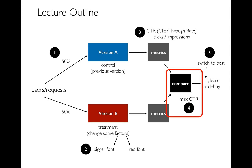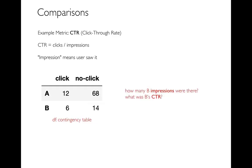Let's talk about how we could compare the metrics coming off our two different versions. We'll keep going with click-through rate: clicks per impressions. An impression means the user actually saw something and had the opportunity to click on it. What you could do is build a contingency table, with one row for version A and one row for version B, and columns for whether they clicked or didn't click.